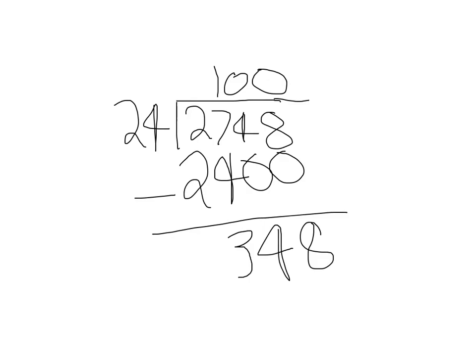Now, how many times does 24 go into 300? If we multiply 24 by 10, we get 240, so we can use that number. We'll put the 10 over the 10's place and 240 under.